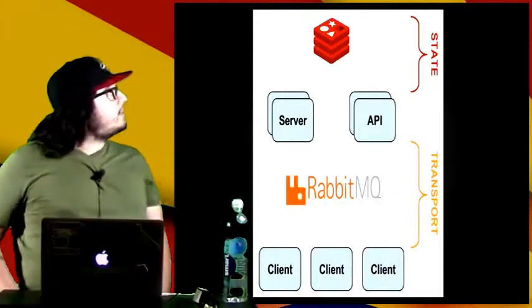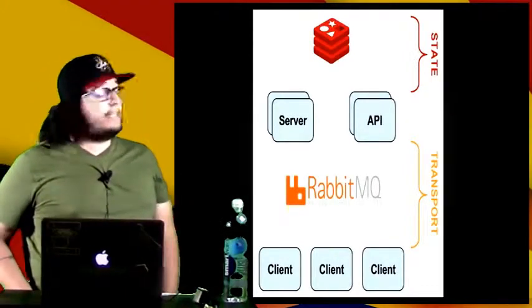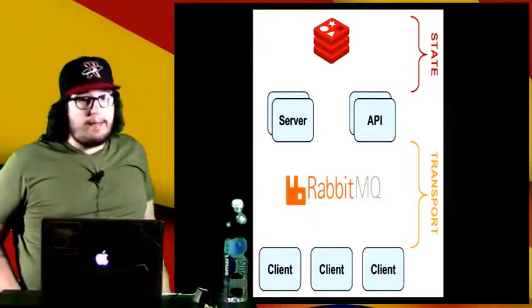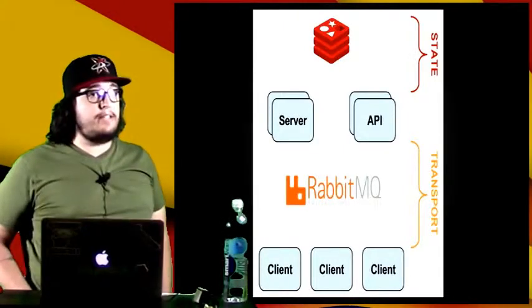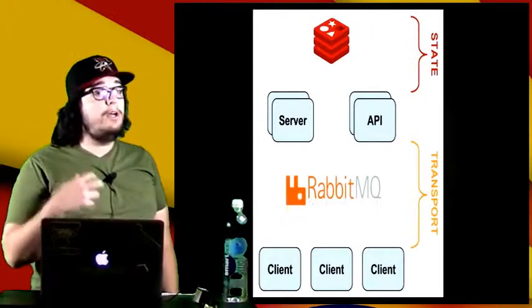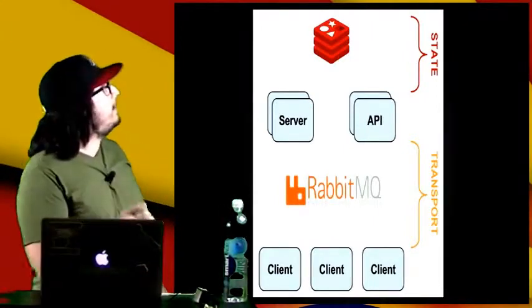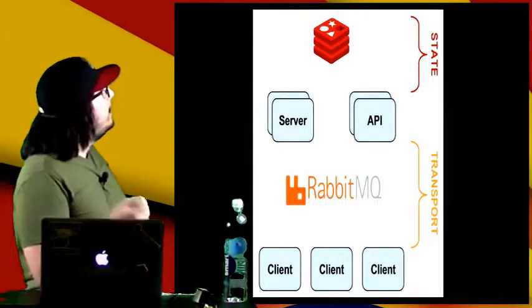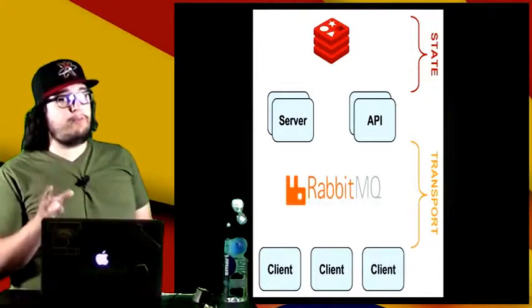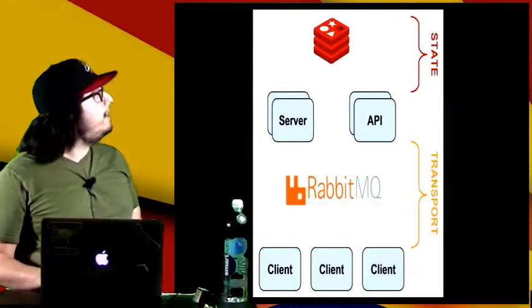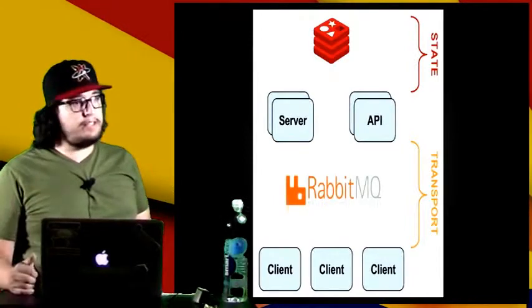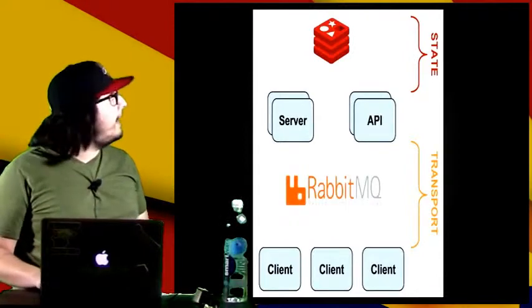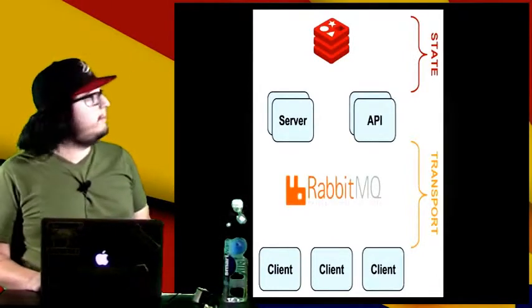This is what the back-end architecture of Sensu looks like. Here you have the Sensu server, which communicates to the clients via RabbitMQ. Each client subscribed to a check will receive those checks, and the server will tell it to run via Rabbit. It will send results back via Rabbit into the server. The server stores the state of the last 20 events for each server in Redis, and then the API fronts Redis so you can tap into it via a REST API to see what checks exist, clients that exist, any events going on — any information you want from Sensu is available via the API.